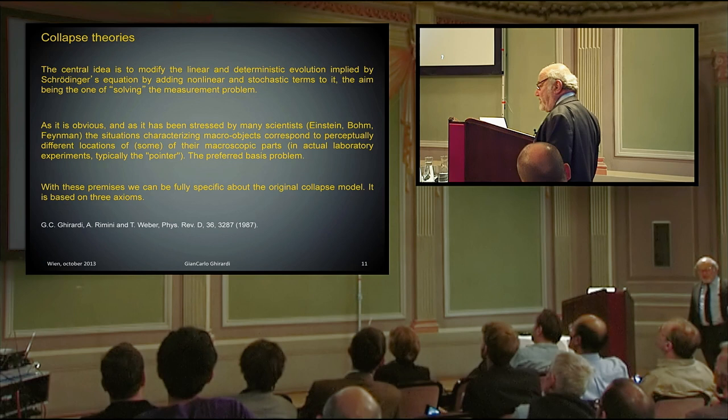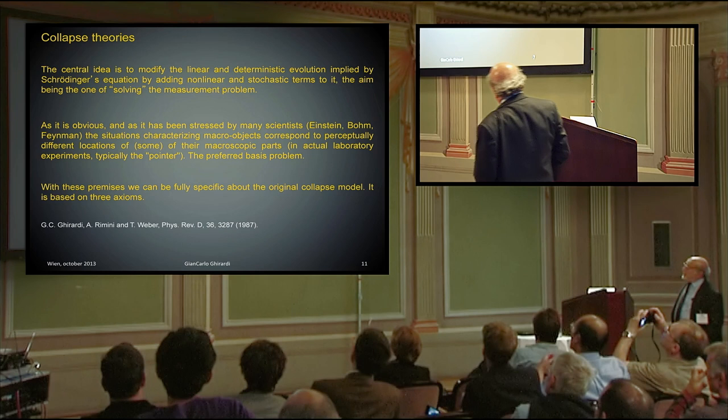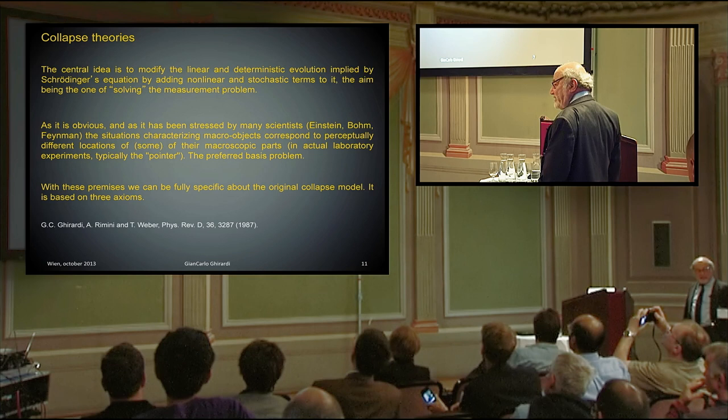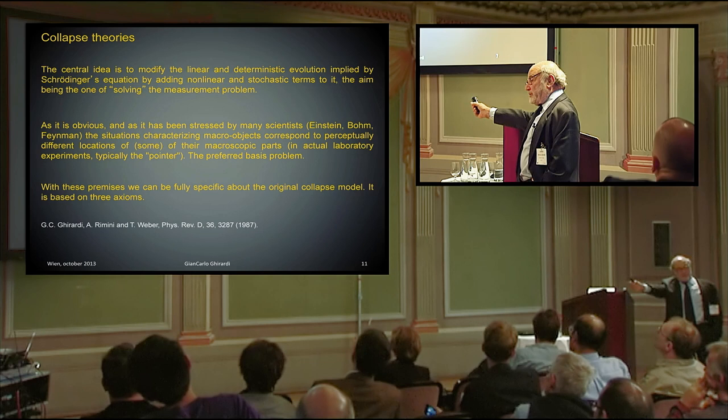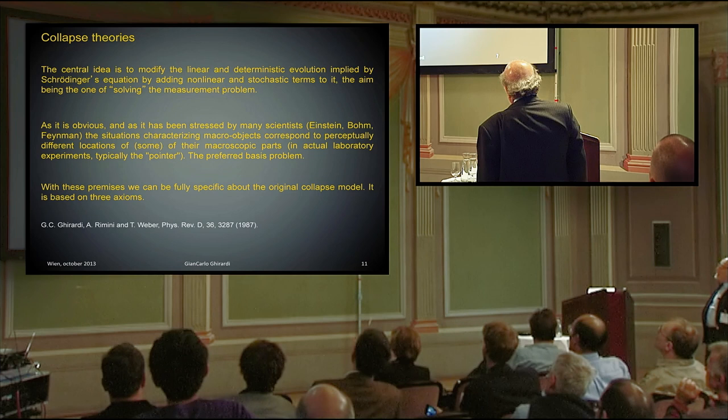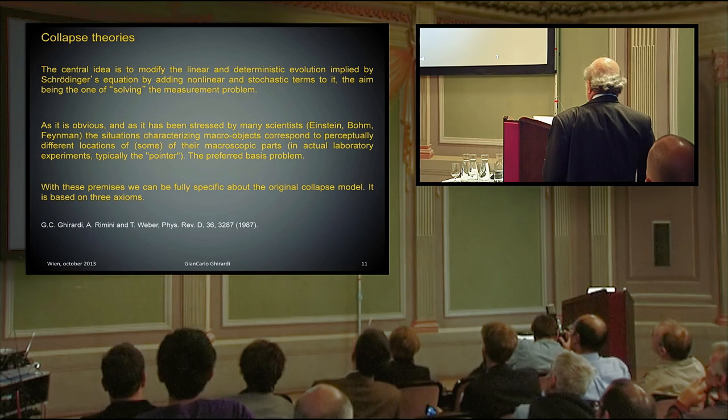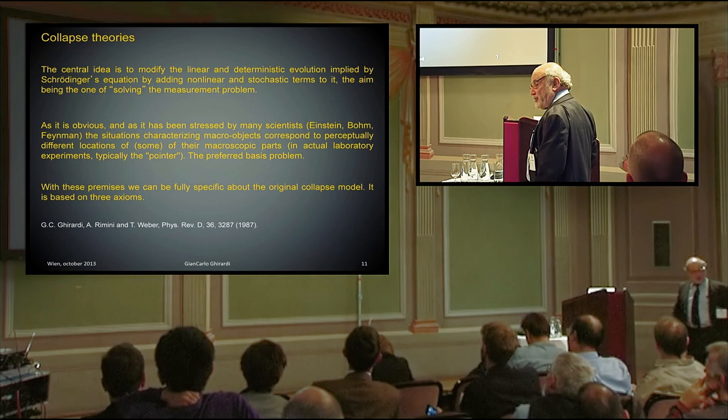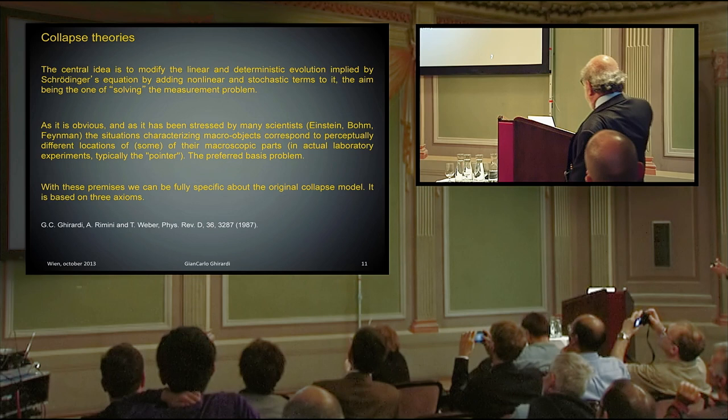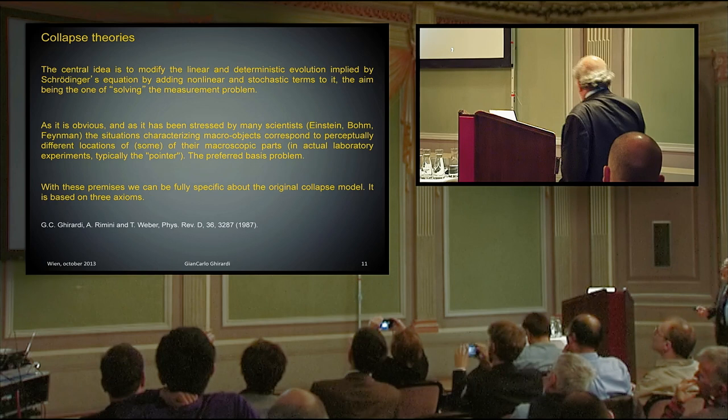A unique mathematically precise dynamic at the non-relativistic level, I insist, governs all natural processes. And now I will present the model, the collapse theory. The central idea is that since the Schrodinger evolution is linear and deterministic and the reduction process is non-linear and stochastic, we try to add non-linear and stochastic terms to the Schrodinger equation.